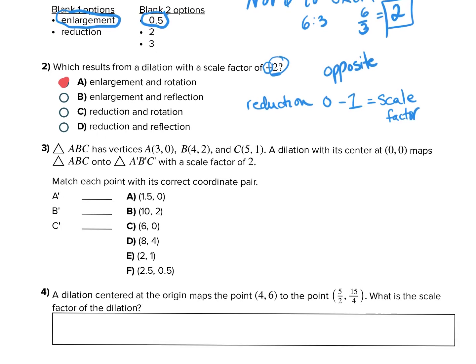Number three, again, we are dilating at zero with a scale factor of two. So all that means is we multiply each x and y value by two. So A becomes six, zero, because anything times zero is zero. Four, two becomes eight, four, and five, one becomes ten, two.